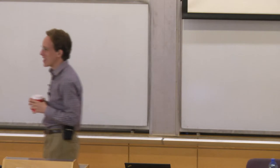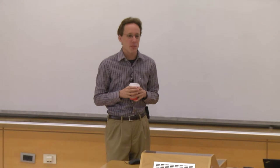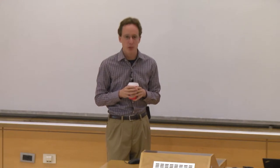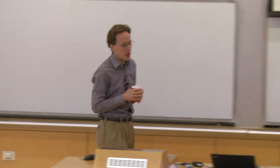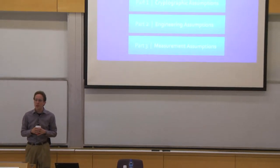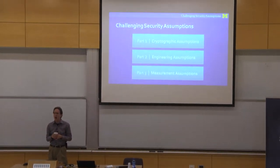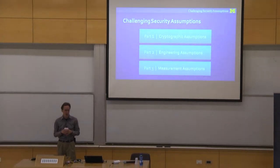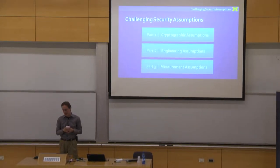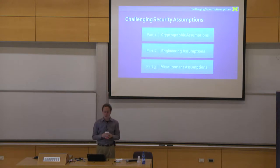In the third part of the talk this afternoon, I'll switch gears and talk about assumptions about the visibility of things on the internet — assumptions surrounding measurement and what we are able to observe. This talk is largely aimed at researchers and people who want to study what's actually going on with protocols and systems on the internet. You'll hear why my IP address is blocked in approximately 1% of the internet.